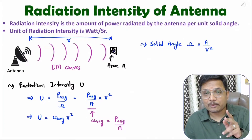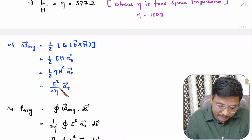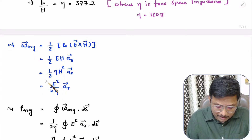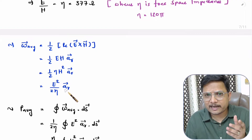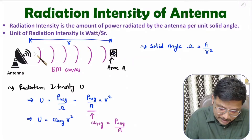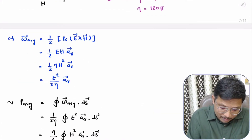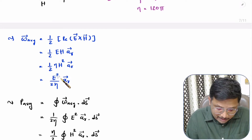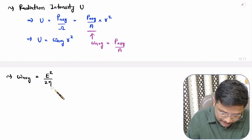In my last video I explained average power density, which is calculated based on electric field and magnetic field. Based on electric field, average power density is E² divided by 2η, in the radial direction. In terms of magnitude, average power density in form of electric field is E²/2η, and in form of magnetic field it is ηH²/2.